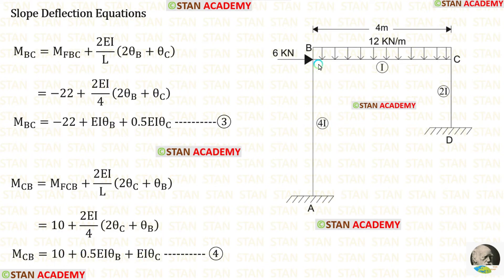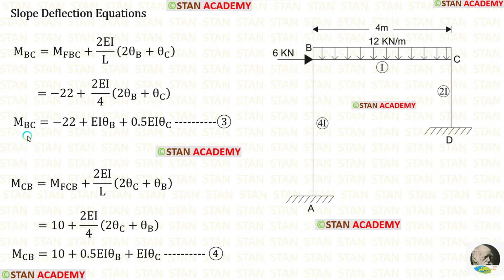Now let us make the slope deflection equations for beam BC. We apply the fixed end moments and the length of BC which is 4 meters. In this way, we have made two equations for beam BC.